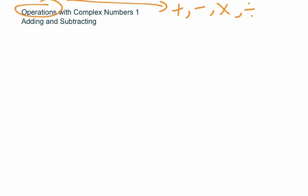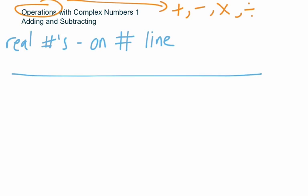Before we talk about what complex numbers are, let's do a quick review of the number types we already know. Your whole life you've been dealing with real numbers. Every number you've dealt with is a real number. I define real numbers as being on the number line — if you can locate the number on the number line, it's a real number. Zero is on the number line, so zero is a real number. Negative numbers are on the number line. Positive numbers are on the number line. Numbers in between, like one half, are also on the number line — so one half is a real number.